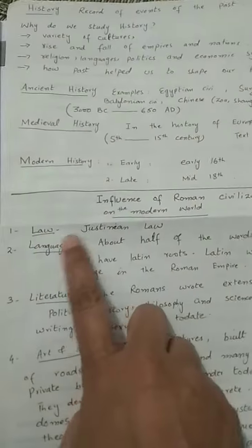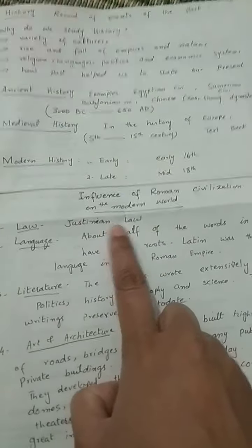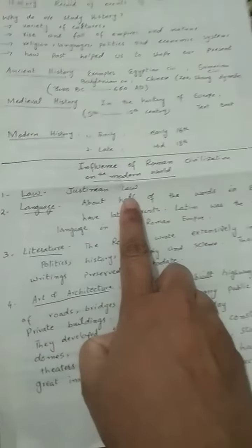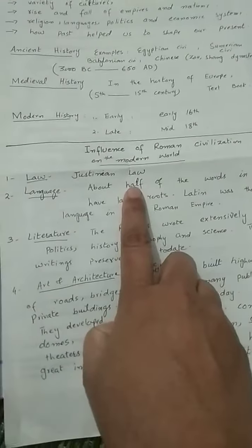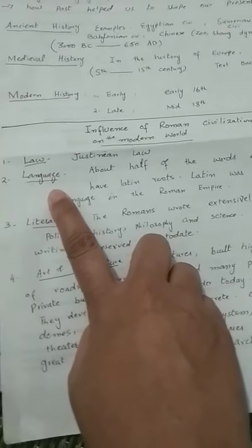The Romans developed a law which was called Justinian law, and this became the very basis of modern day law. Number two, language.